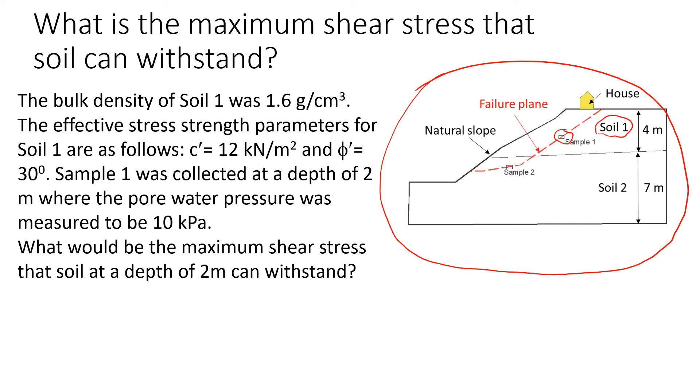What we know about the soil is that it has a bulk density of 1.6 grams per cubic centimeter. We also know that the effective stress parameters of this soil can be described by the effective cohesion which is 12 kilonewtons per square meter and the effective friction angle which is 30 degrees.